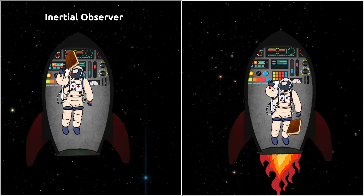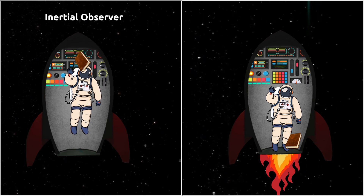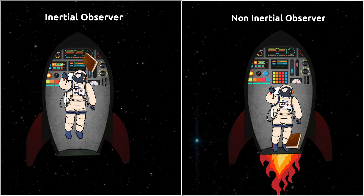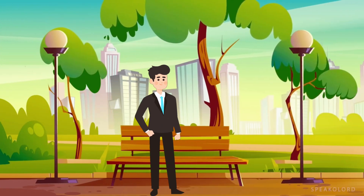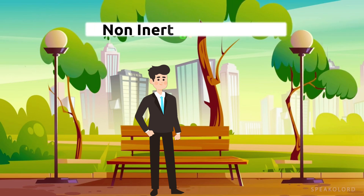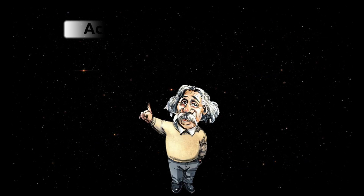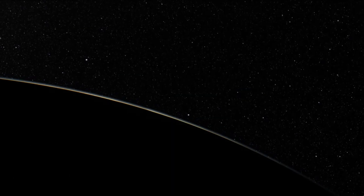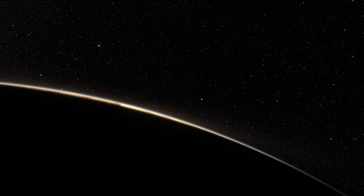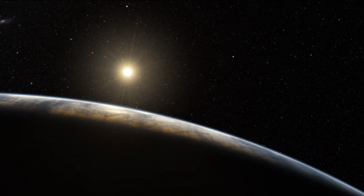But when the rocket is accelerating, the man can feel his own weight due to the acceleration, so he is considered to be a non-inertial observer. Similarly, the same situation happens on Earth — we cannot feel weightless, so we are also considered non-inertial observers. Therefore, Einstein believed that the acceleration caused by the Earth is what we consider to be gravity. This means there is no gravitational field; we are simply being accelerated upward toward space by the Earth.